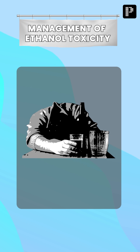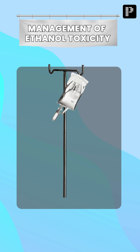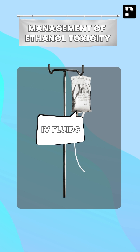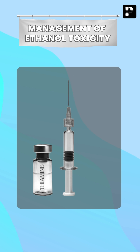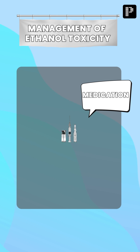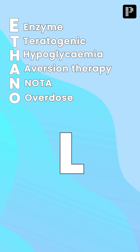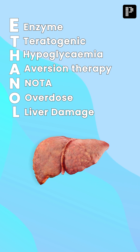The next letter is O — O stands for overdose. In ethanol intoxication, the management includes IV fluids, thiamine injection, glucose, and dialysis.